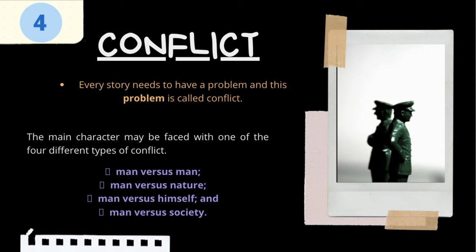The fourth element of the story is Conflict. Every story needs to have a problem and this problem is called Conflict. The main character, also called the protagonist, needs to have someone or something to challenge him. Without conflict, the story will not go anywhere and will not be very interesting to the readers. The main character may be faced with one of four different types of conflict: man vs. man, man vs. nature, man vs. himself, and man vs. society.